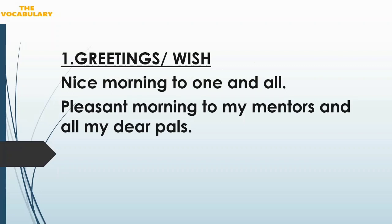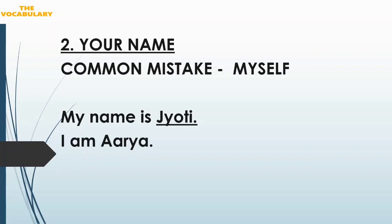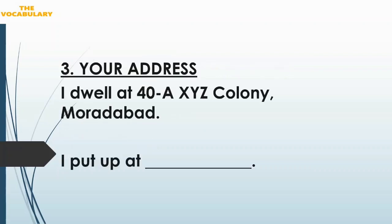The next heading is your name. After you greet the people, you tell your name. Jab aap apna name bata rahe hain, you have to pronounce your name very properly and perfectly. Like for example: 'My name is Jyoti' or 'I am Arya' — dono tarike se aap apna name bata sakte hain. But the common mistake we do is: hum 'myself' use kar dete hain. We do not have to use 'myself.' You can say 'My name is' or 'I am.'